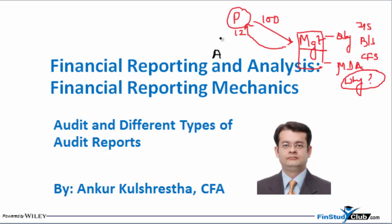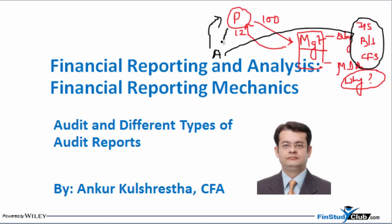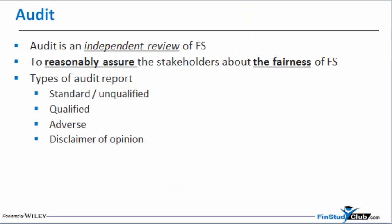So the promoter appointed an expert called A, who is an accounting expert. The role of A was to go to the management, verify these three things, and report back to the person who appointed him. An important point: A did not know management before; A was appointed by P; and A will report to P, not to M. This person is called the auditor — appointed by the shareholder, reporting back to the shareholder, in order to have an independent review of the financial statement. An audit is an independent review of financial statements to reasonably assure — not one hundred percent, but materially — the stakeholders and shareholders about the fairness of the financial statement.